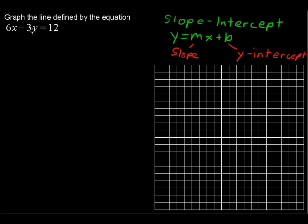Okay, so let's solve this equation for y so it looks like slope-intercept form. We'll subtract 6x from each side. So we're left with negative 3y equals negative 6x plus 12.